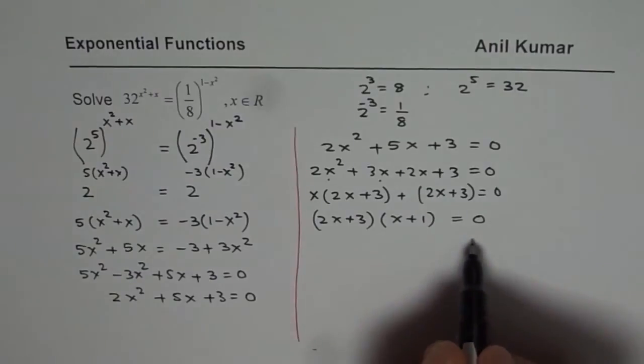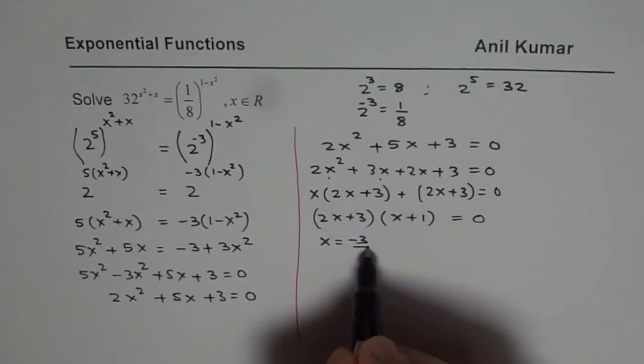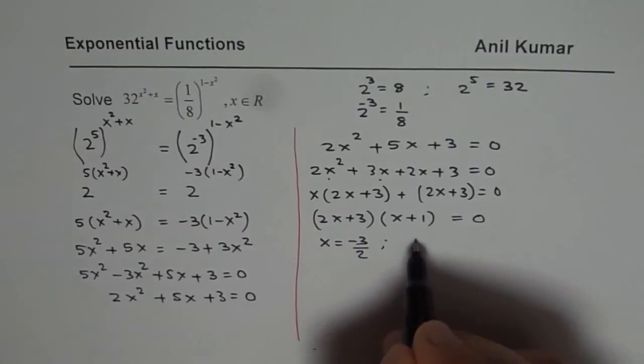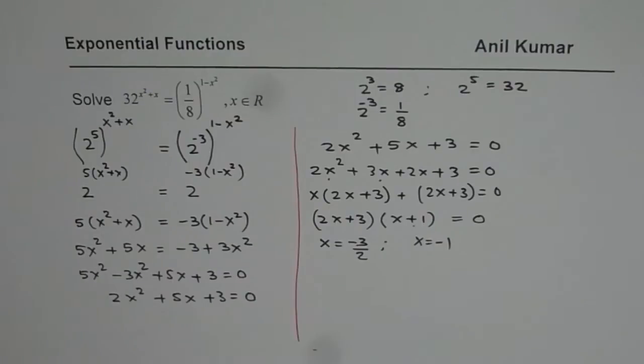For this quadratic equation to be true, x could be equals to minus 3 over 2. That will give us a 0 here or x equals to minus 1. That will give us 0 on the other side. So these are two solutions for x. That is how you can actually solve such equation.